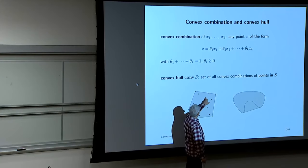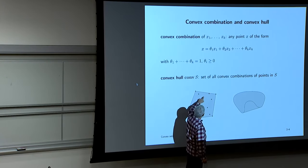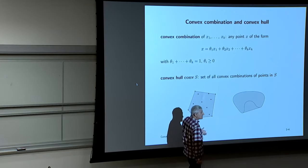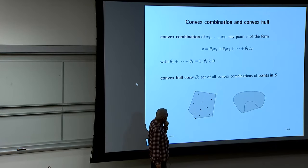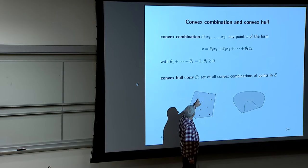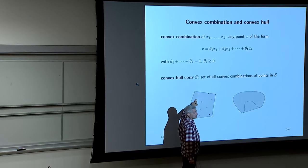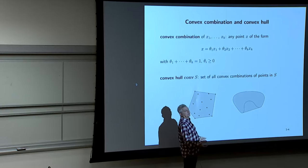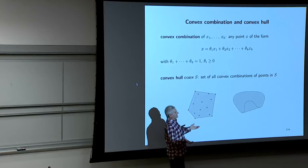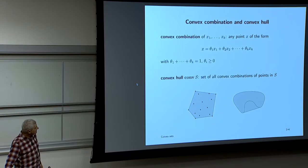Here's an example with a finite set of points — the convex hull is drawn in gray. A point is in the convex hull if it can be written as a convex combination of the original points. The coefficients are not unique — a point might be expressible as a convex combination in multiple ways, for instance one-third, one-third, one-third of three points. The convex hull is the smallest convex set that contains the original set.